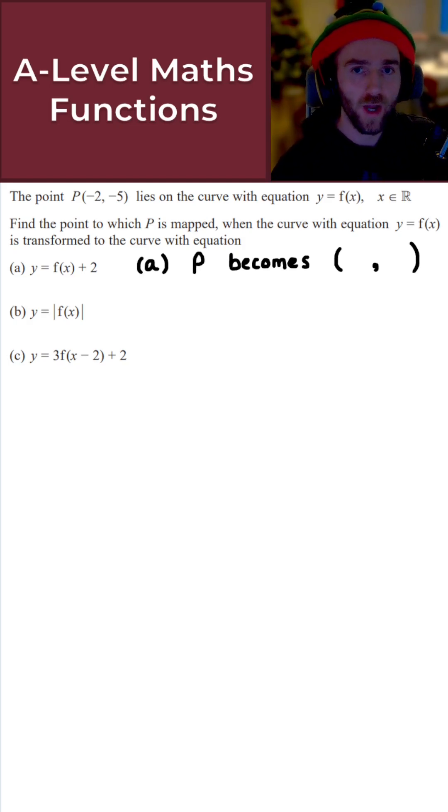We're simply adding 2 to the y-coordinate. So if I've got (-2, -5) here, the x-coordinate stays as it is at -2, and for the y-coordinate, add 2 to that. So -5 + 2, we get -3. In that case, P becomes (-2, -3).